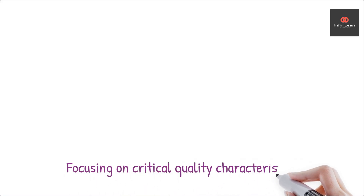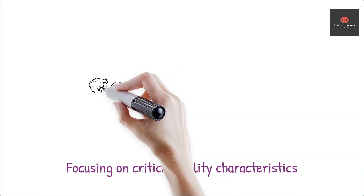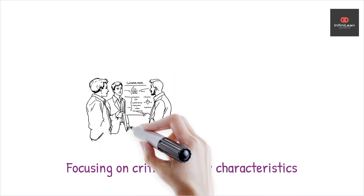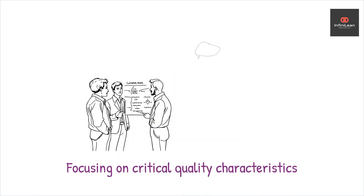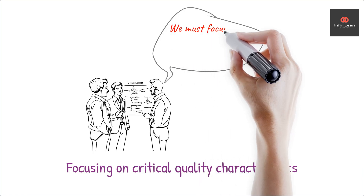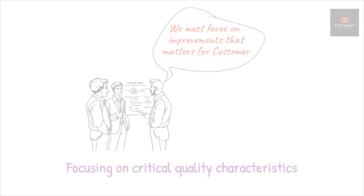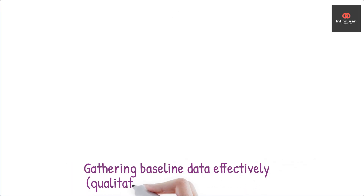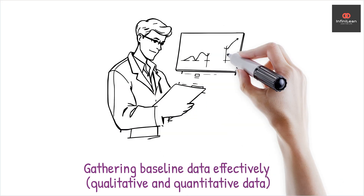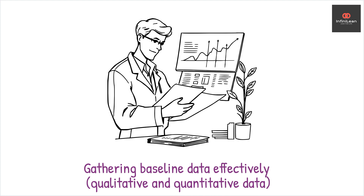Focusing on areas that significantly impact customer satisfaction and business goals is critical. In other words, selecting critical-to-quality characteristics, or CTQs, reflects the most important aspects of the customer's needs. Next, gather baseline data — this is your starting point for measuring improvements later. For accurate insights, it's vital to collect both qualitative and quantitative data, which often includes customer feedback, process cycle times, or defect rates.